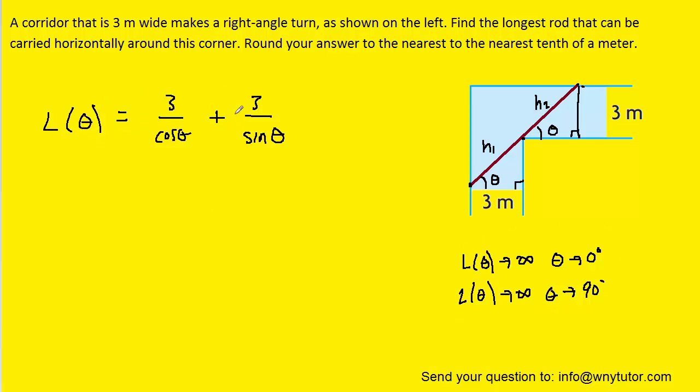Now, we are looking for the minimum of this function, and to do that we're going to have to calculate the derivative. But before doing that, it might be helpful to first bring the cosine to the numerator as well as the sine to the numerator. And, of course, when we do that, the exponents become negative.